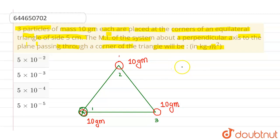So moment of inertia about this axis will be given by m₁r₁² + m₂r₂² + m₃r₃². This thing we know.